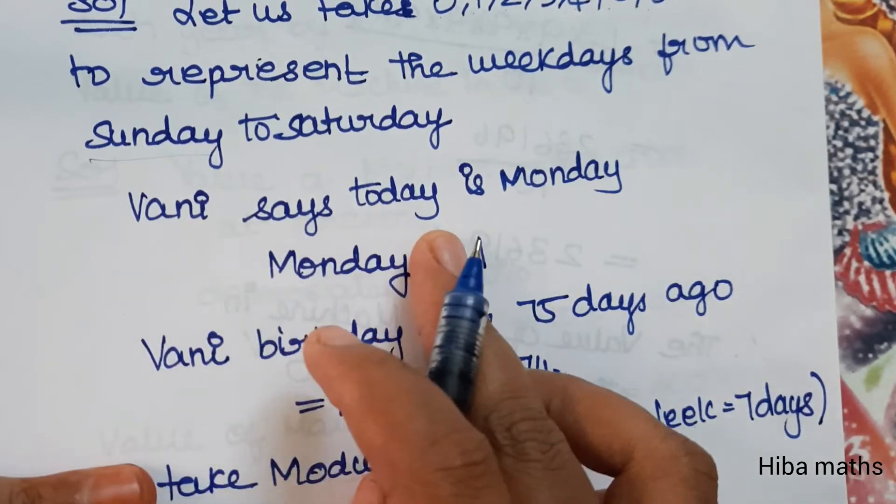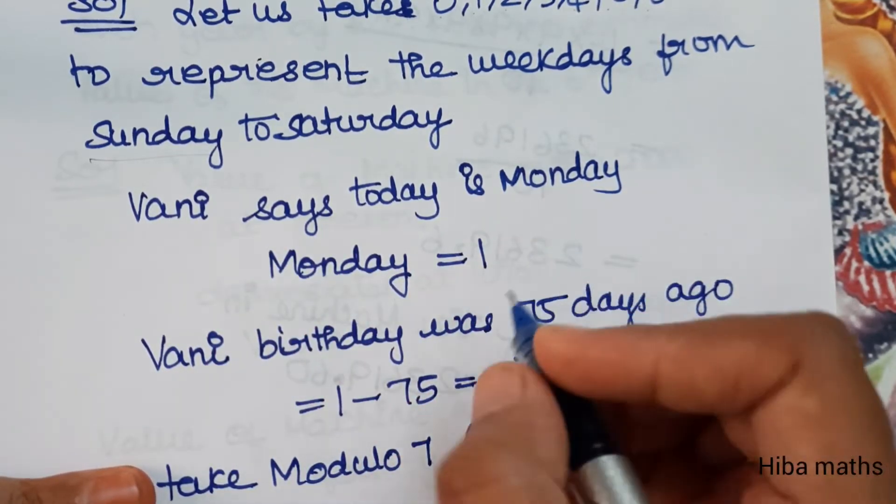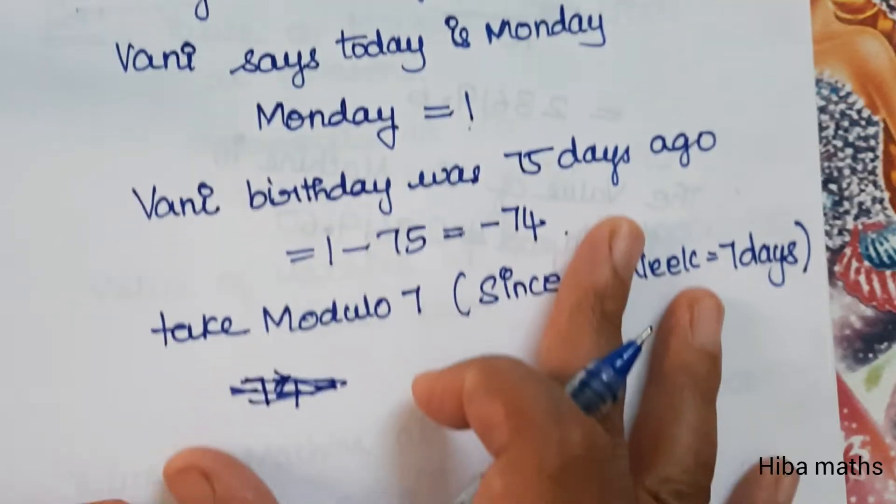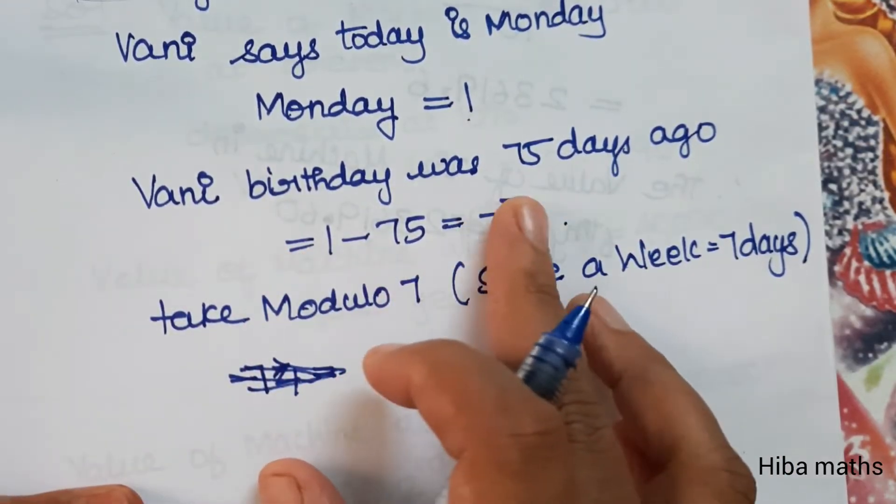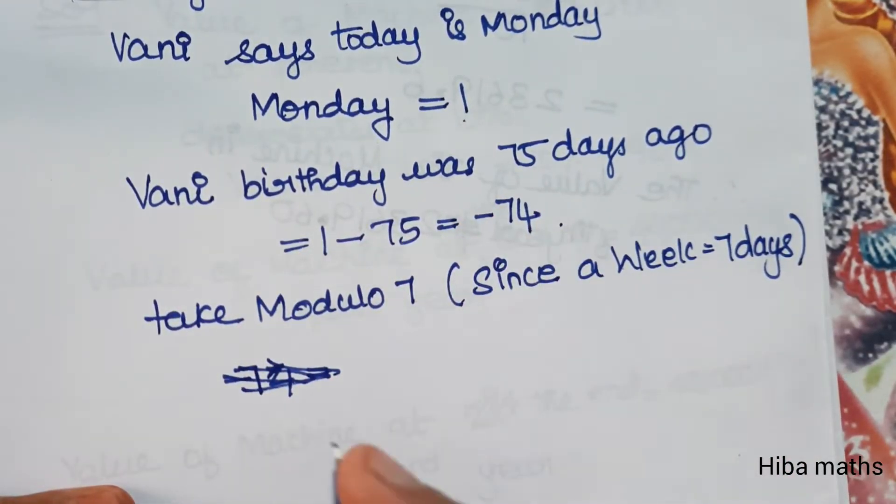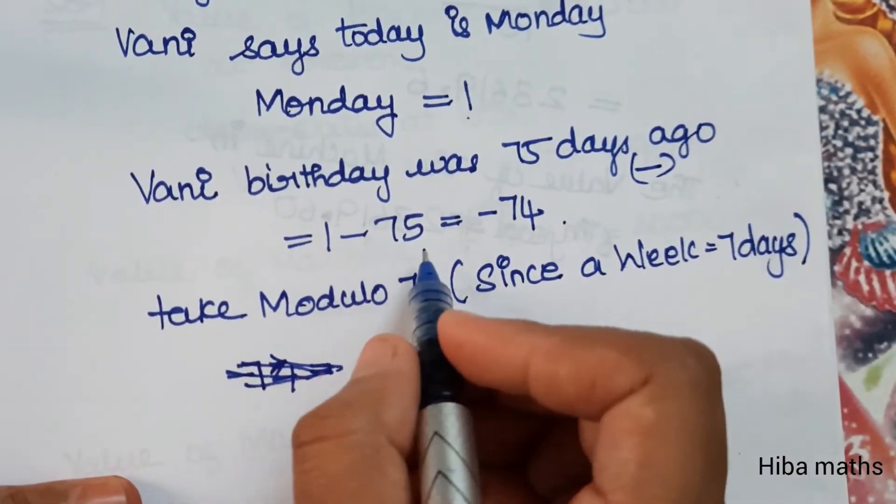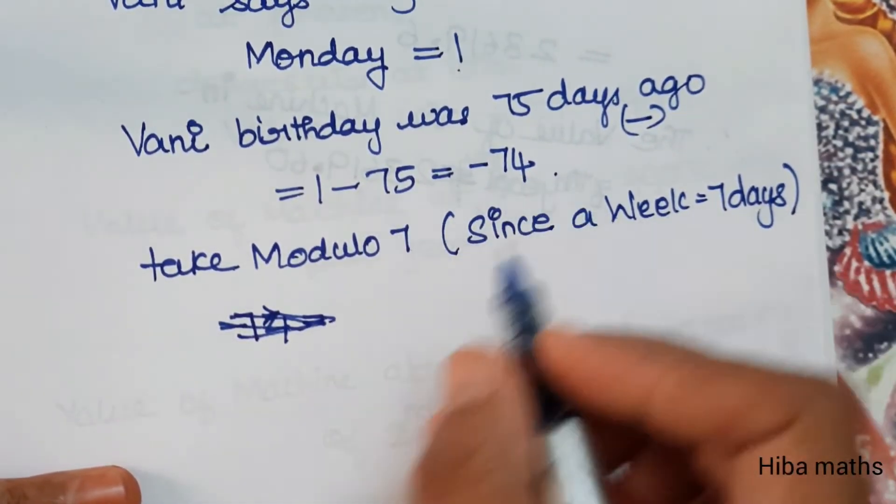Vani says today is Monday, so Monday is number 1. Vani's birthday was 75 days ago, so 1 minus 75 equals minus 74.